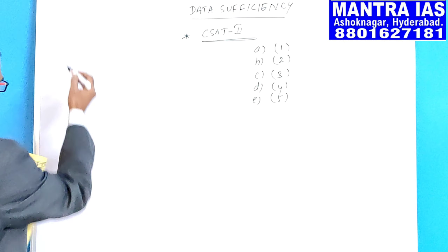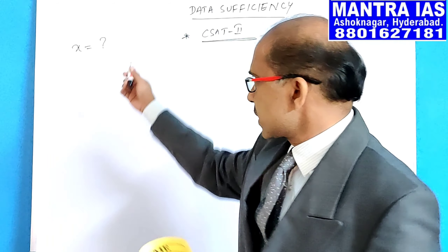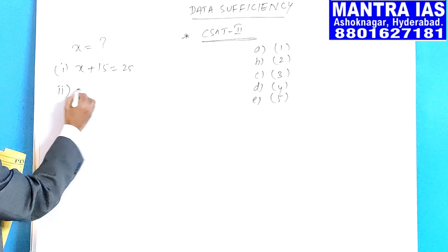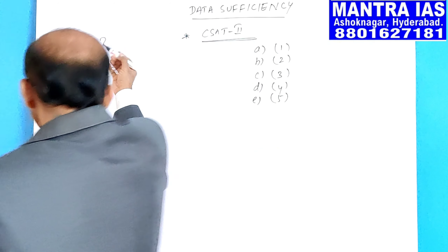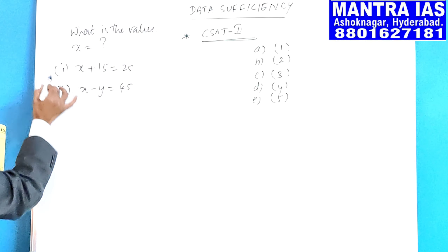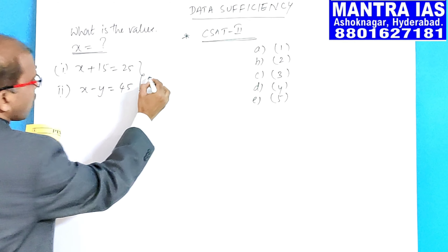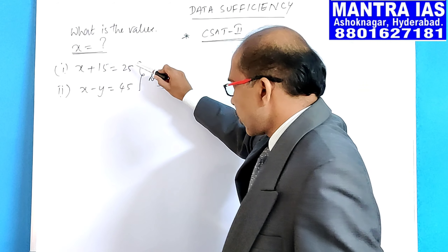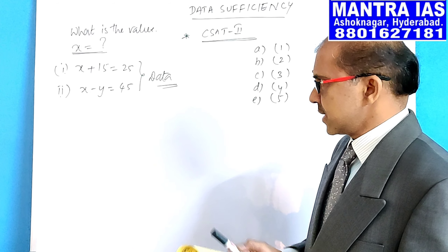For example, a question is given to you: what is the value of X? The first part is that question, followed by two statements. The first statement is: X plus 15 is equal to 25. The second statement is: X minus Y is equal to 45. In data sufficiency, each question is followed by two statements called data, and by using these statements we have to solve the question.